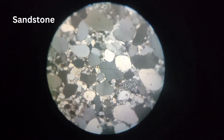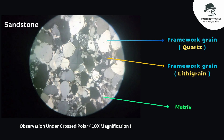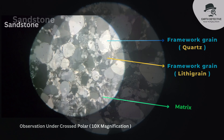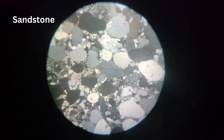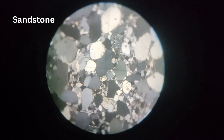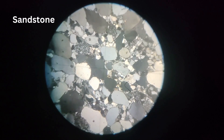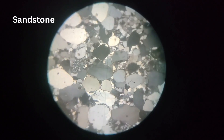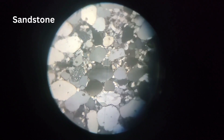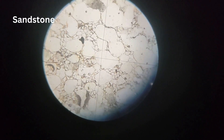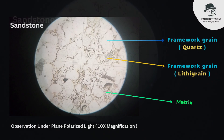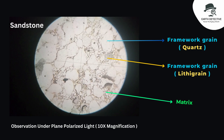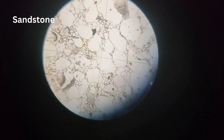Here most of the framework grains are quartz. You can identify quartz by its wavy extinction and first-order yellow to gray color under crossed polars, and its colorless appearance, low relief, and absence of cleavage under plane polarized light.